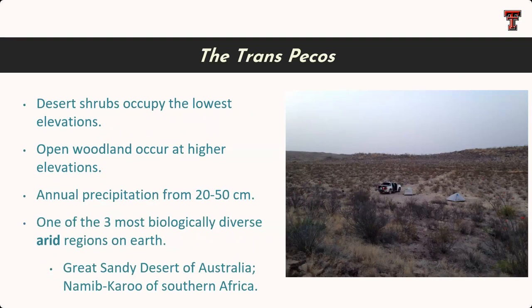Desert shrubs occupy lower elevations, and there are open woodlands at higher elevations in the mountain ranges. Precipitation is really low — 20 to 50 centimeters. Surprisingly, the Chihuahuan Desert is considered one of the three most biologically diverse arid regions on earth — on par with the Great Sandy Desert of Australia and the Namib Karoo in southern Africa.